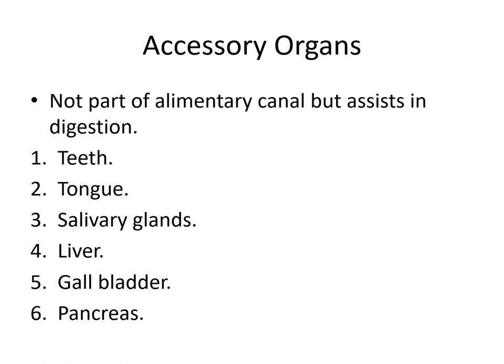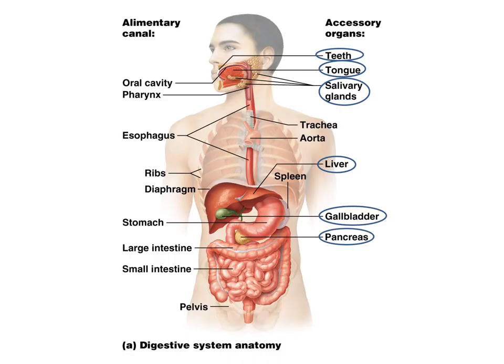The accessory organs include things like your teeth, your tongue, your salivary glands, your liver, gallbladder, and the pancreas. Here is a figure showing the relative location of these accessory organs.